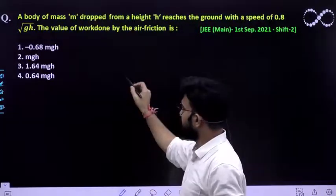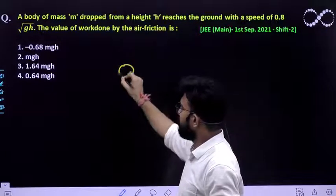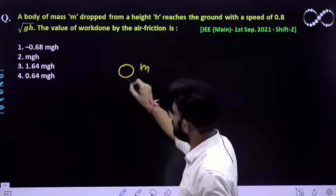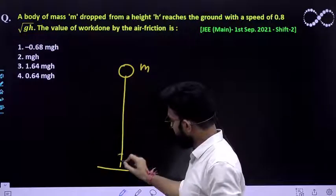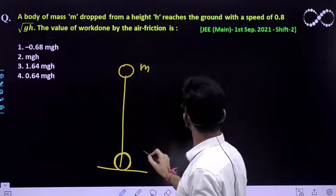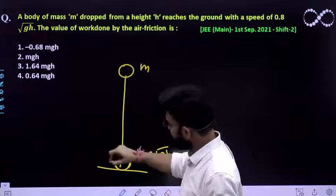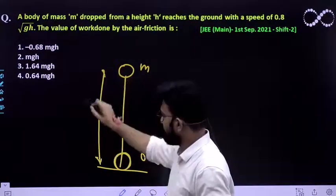So that means the question is: if a ball or any particular body whose mass is m is dropped from a certain height of h, it comes down and hits the ground with a speed of 0.8 root gh, where h is the height through which it has fallen.